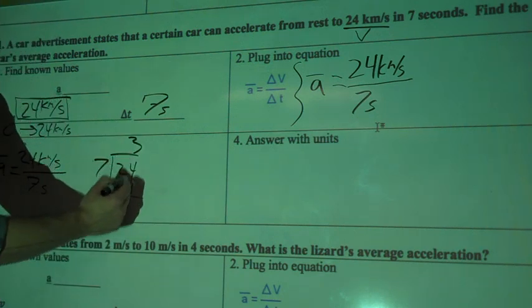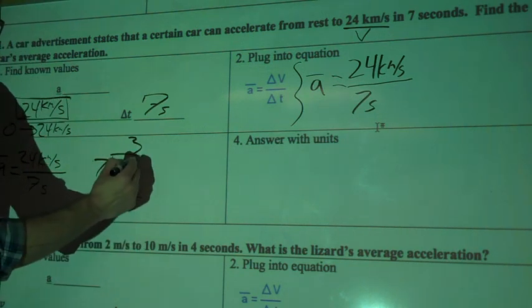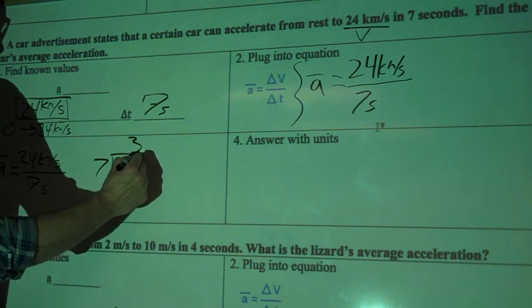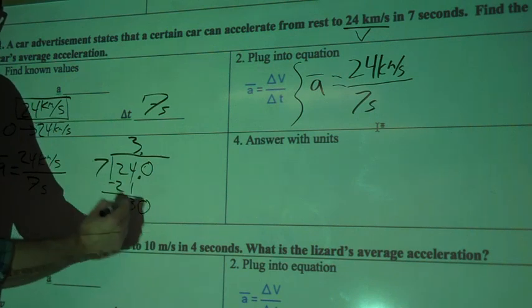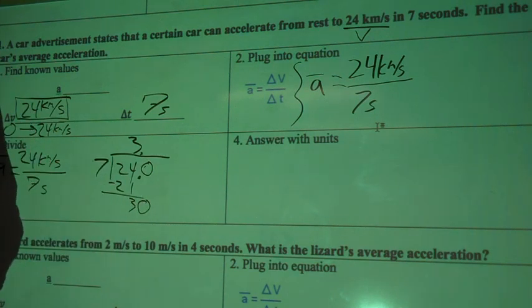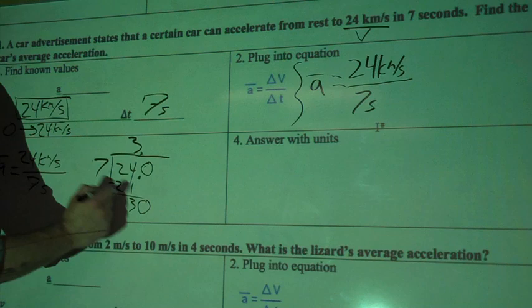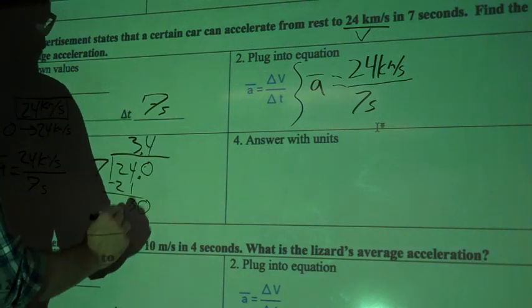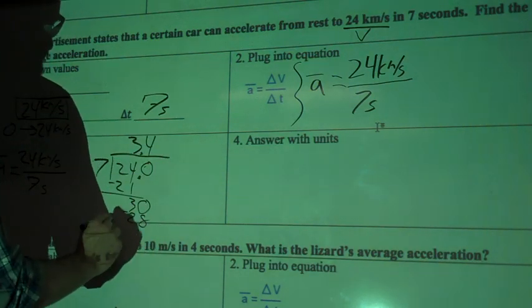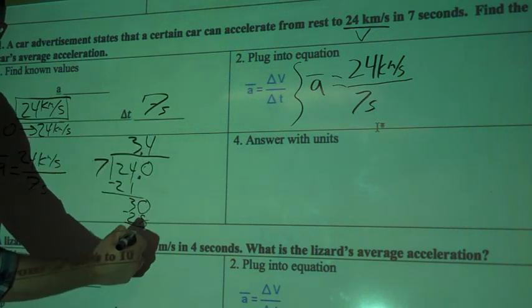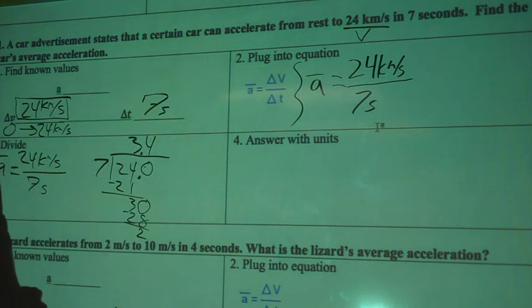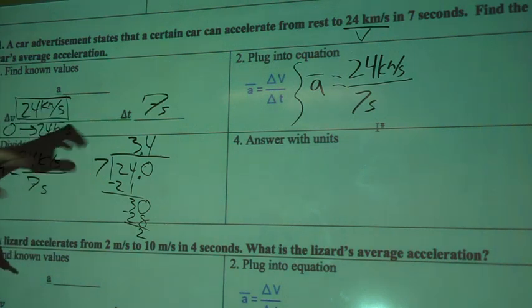So, subtract 24 from 21, I get 3, and I'll put my decimal point there, and then up here as well, with the 0. Okay, bring that down. 7 goes into 30, let's see, 28, so 4 times. So 28, subtract that. I'll get, let's see, 30 minus 28, I'll get 2. And we're going to stop there. I just want you to get a general idea of what this is going to be.